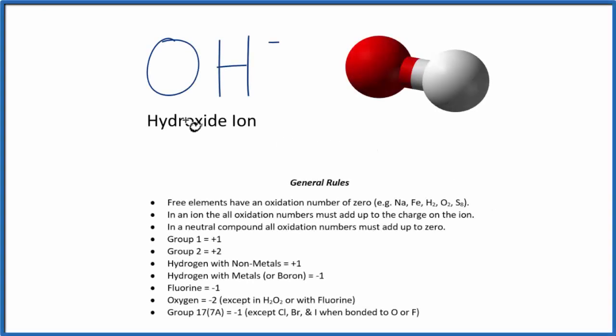In this video we'll find the oxidation number for each element in the hydroxide ion OH minus. In this image the red is the oxygen, the white is the hydrogen, and we use these rules to find the oxidation number.